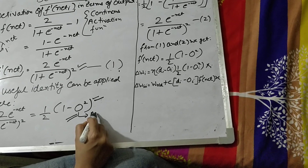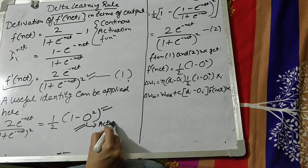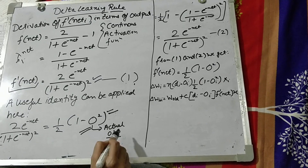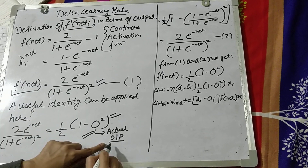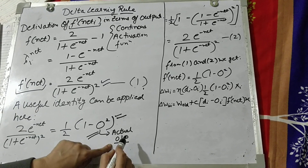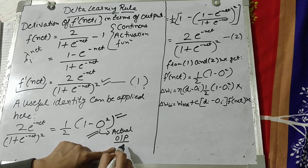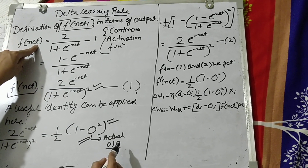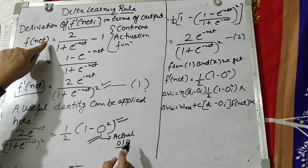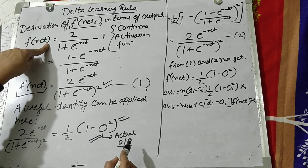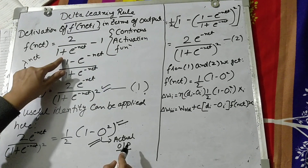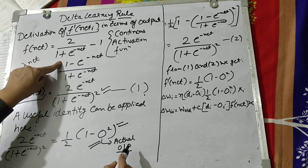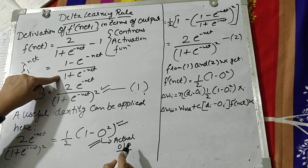We use half of (1 minus o) squared, where o here means actual output — as I have told you in my previous video lecture. The actual output is the output which you compute. For that output, we have evaluated the value of f(net). The formula for f(net) in this case is based on the continuous activation function.